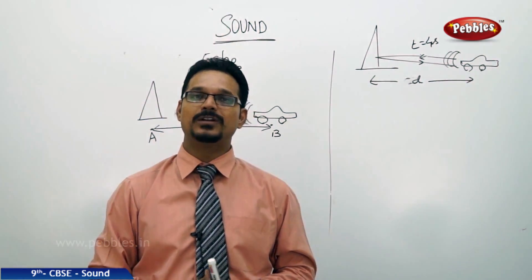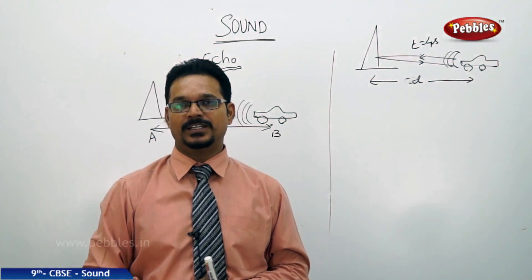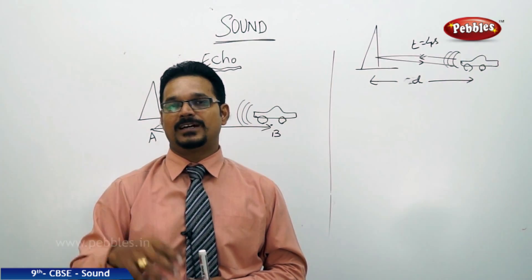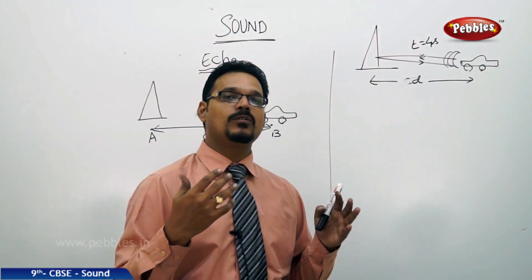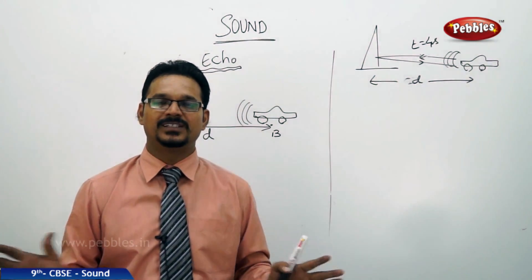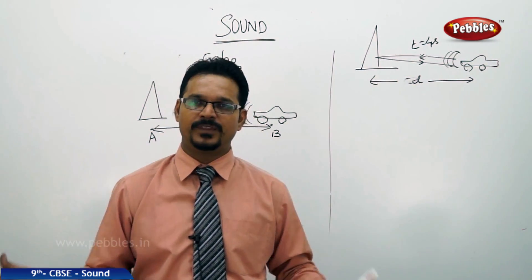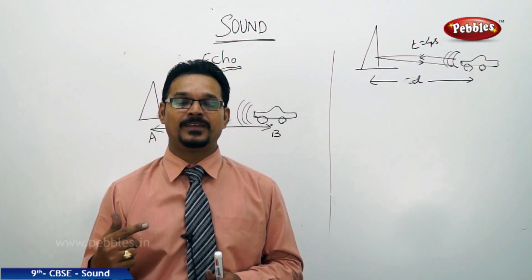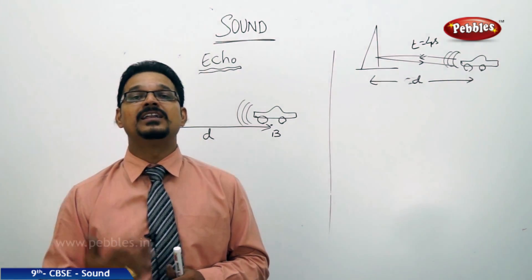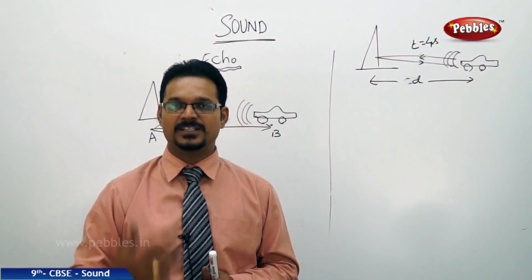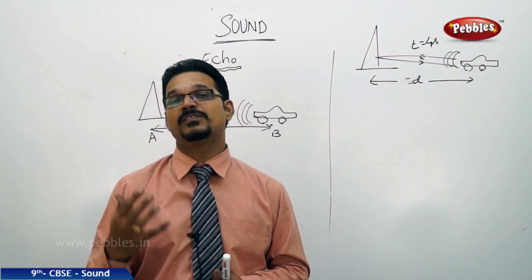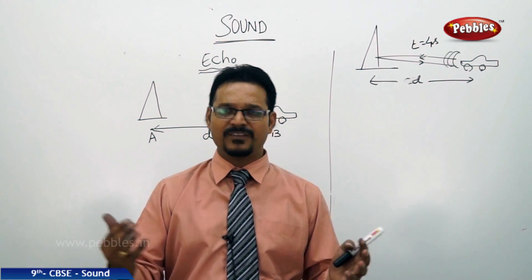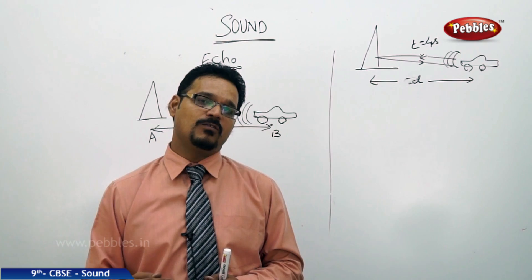When you shout loudly, within seconds you can hear your sound again. Another example: you have gone to an auditorium which is empty, a big room with nothing there. If you shout, you can hear the sound again and again. This is a reflection of sound, but it's a special case of reflection of sound which is called echo.